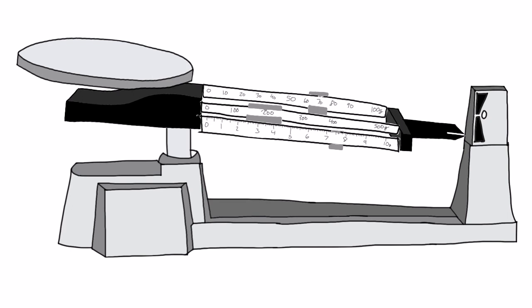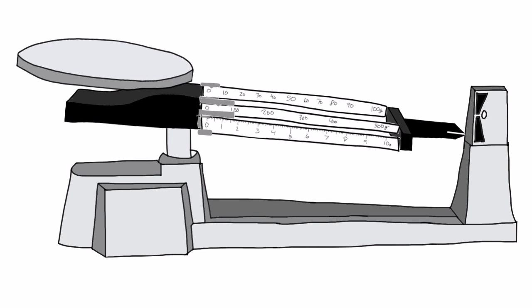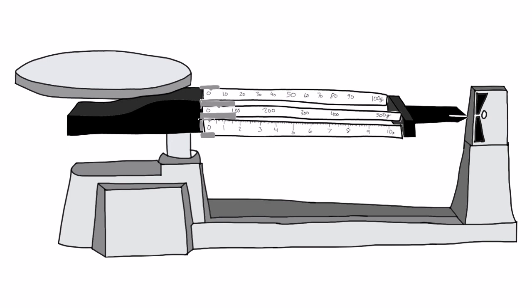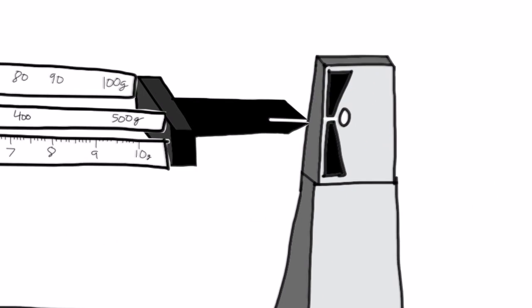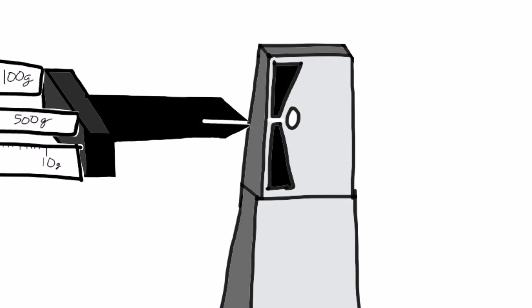To measure the mass of an object, a triple beam balance can be used. First, with the pan empty, move all three sliders to their zero positions. Look at the indicator to make sure the scale is calibrated. The indicator should line up with the fixed mark.